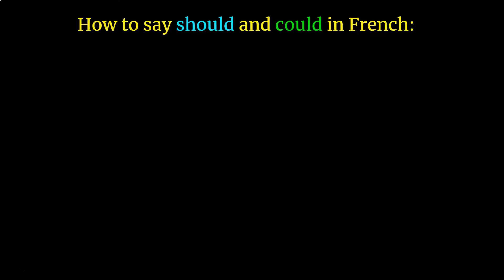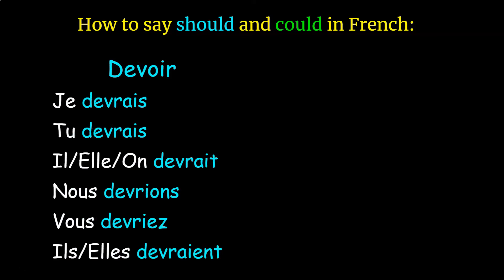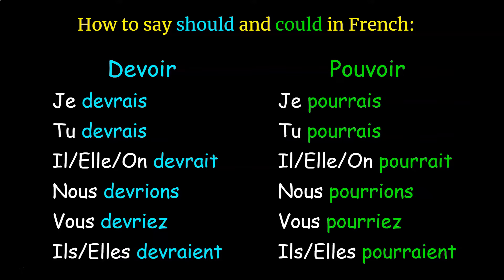To say 'should,' use the verb devoir in le conditionnel présent. To say 'could,' use the verb pouvoir in le conditionnel présent. To say I should, you should, etc. in French: je devrais, tu devrais, il/elle/on devrait, nous devrions, vous devriez, and ils/elles devraient.